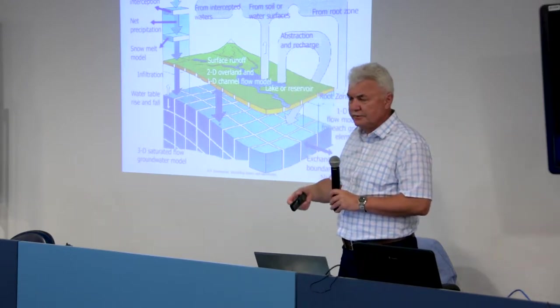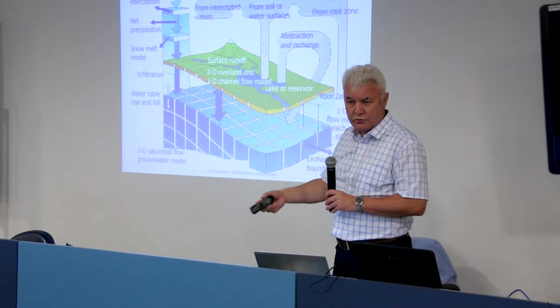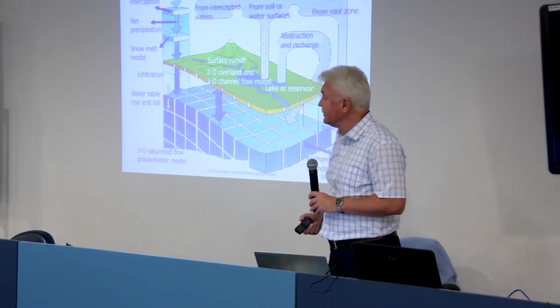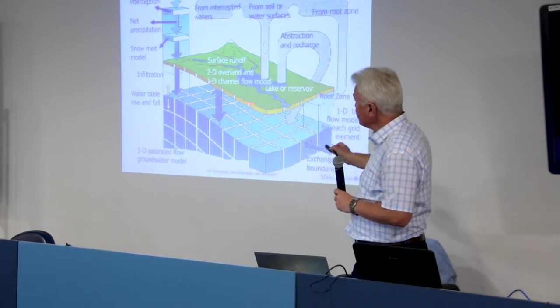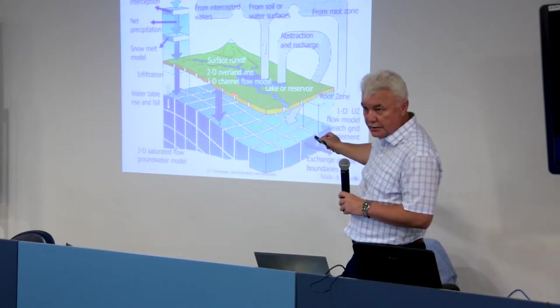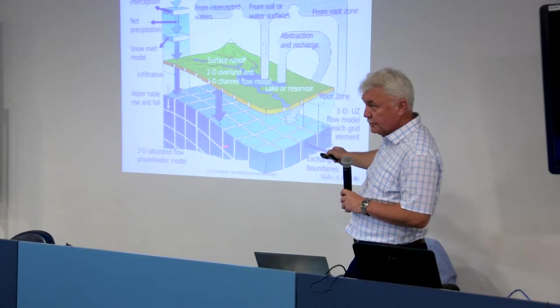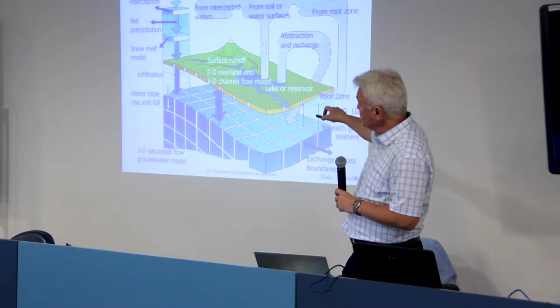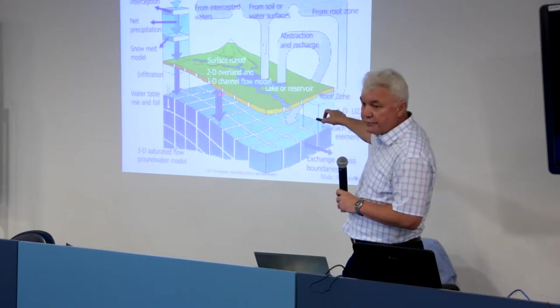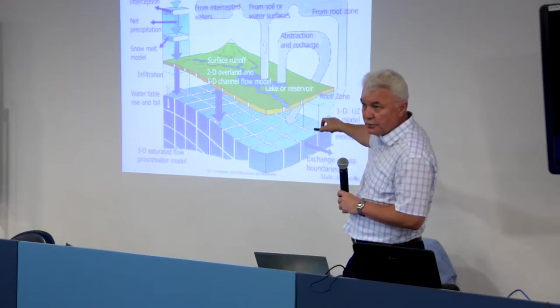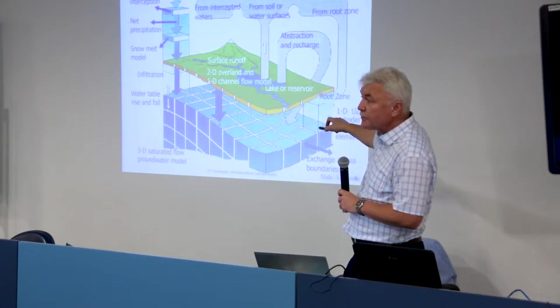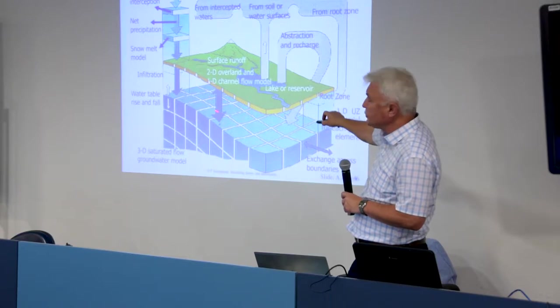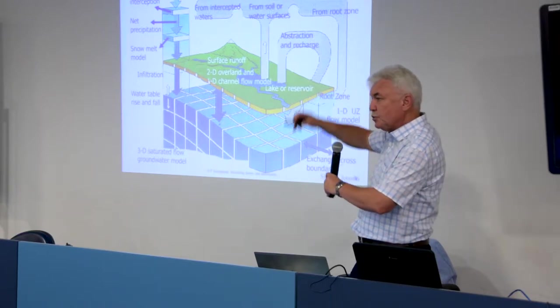There is also 2D model, which can be modeled by Mike 21, and Mike 3, which is 3D model. And there is also groundwater component. It's not easy to make interface between surface flow and ground flow because equations have different forms, so they're not compatible.